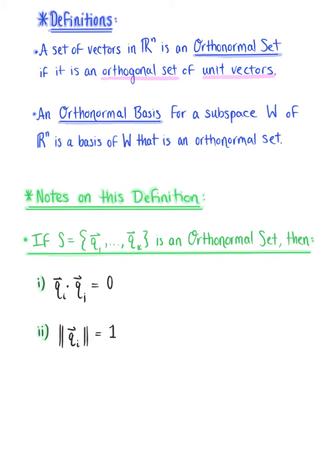Now the fact that vector q sub i is a unit vector is actually equivalent to saying that the dot product of this vector with itself is equal to one.